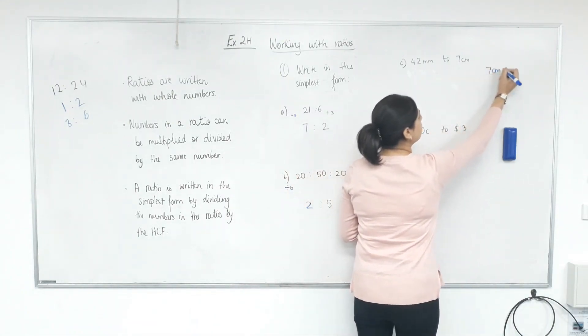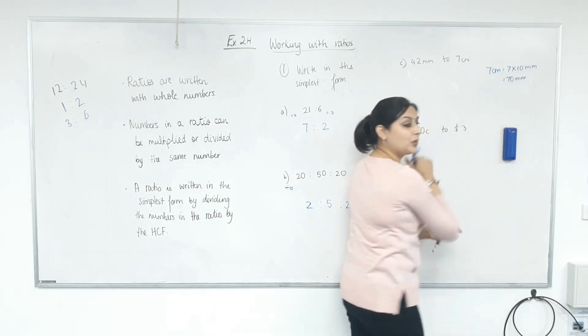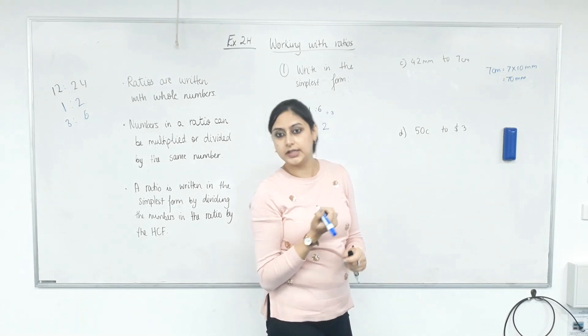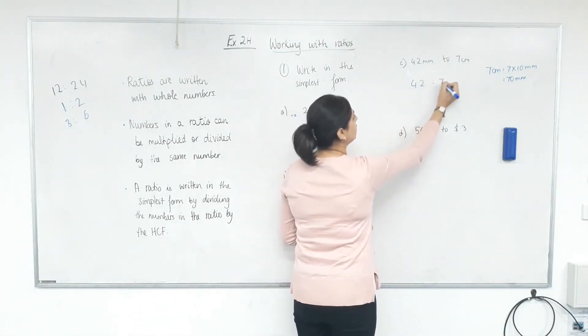So 7 centimeters is? Do we all know that? Yeah. Now, at least. Okay. Now we can write the ratio. 42 is to 70.